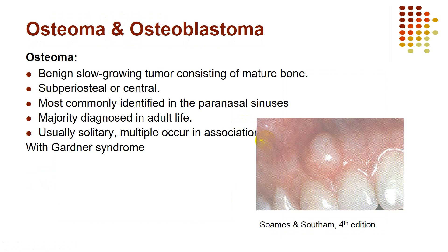The first benign bone-forming tumor is osteoma. Because it is benign, it is slowly growing and consists of mature bone. It can be subperiosteal — just below the periosteum — or central, meaning within the bone itself. You can find only a mild expansion of the alveolar process. The majority are diagnosed in adult life and they are solitary or single tumors.